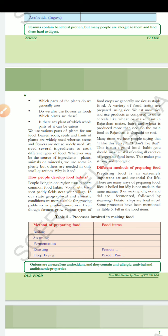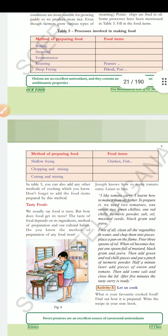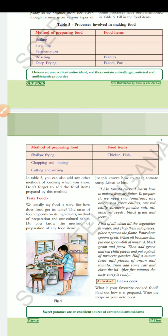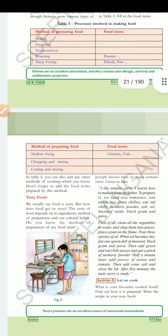Table 5 is given; you have to fill this table. For example: boiling — potato, eggs. Steaming — making idli. Fermentation — jalebi. Roasting — groundnuts, peanuts. Deep frying — pakodi, puri. Shallow frying — that means not deep frying — food items like chicken, fish. Chopping and mixing — cutting into small pieces and mixing. You have to complete this table.